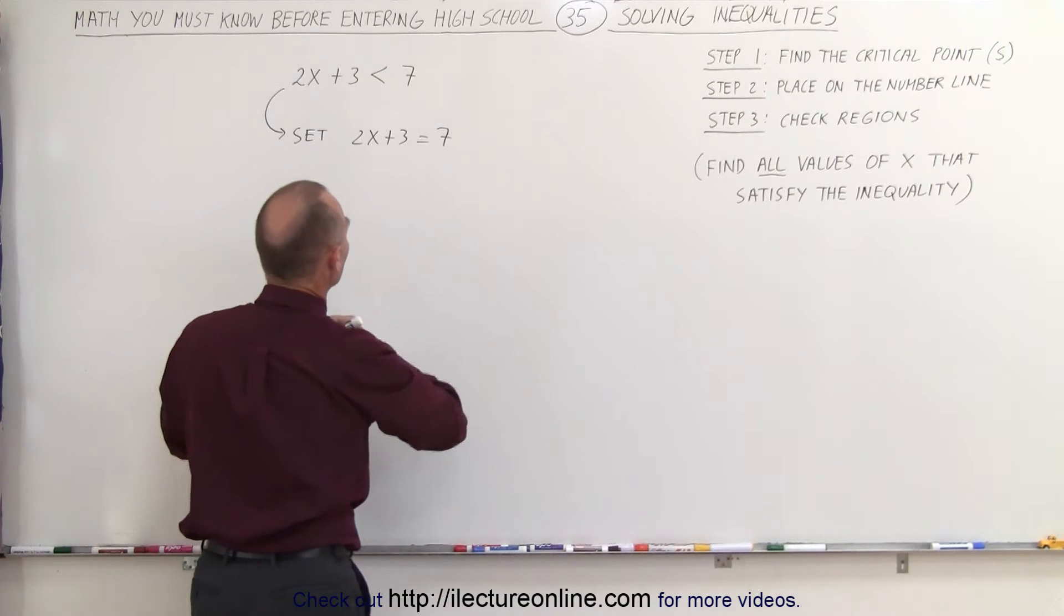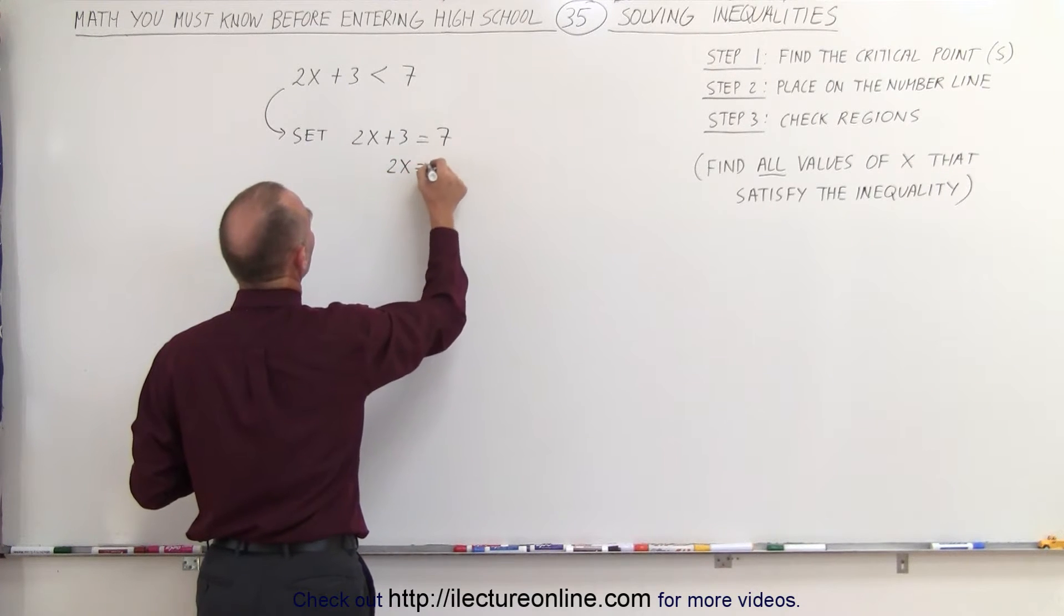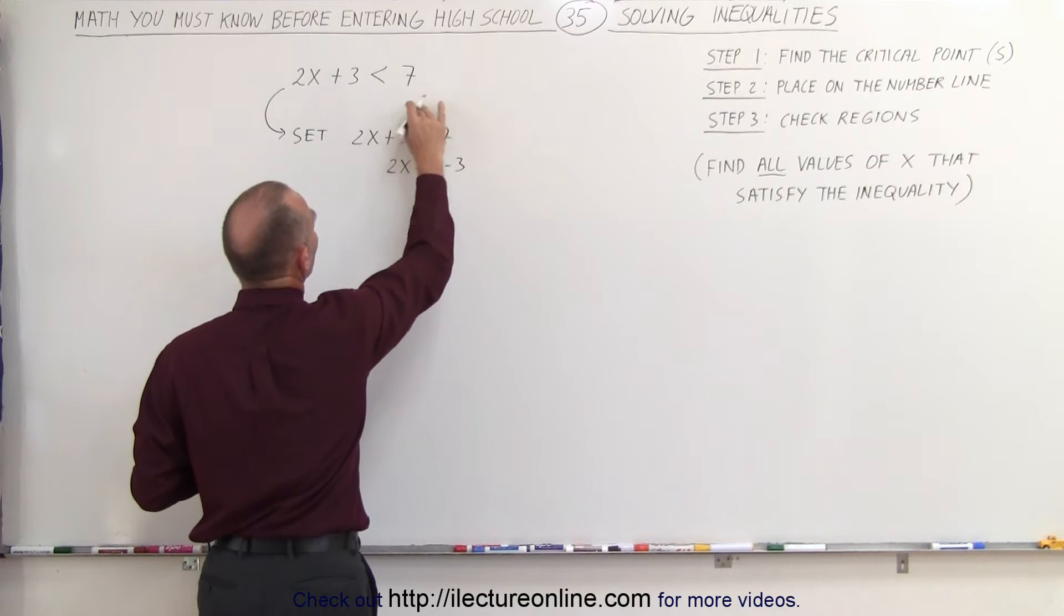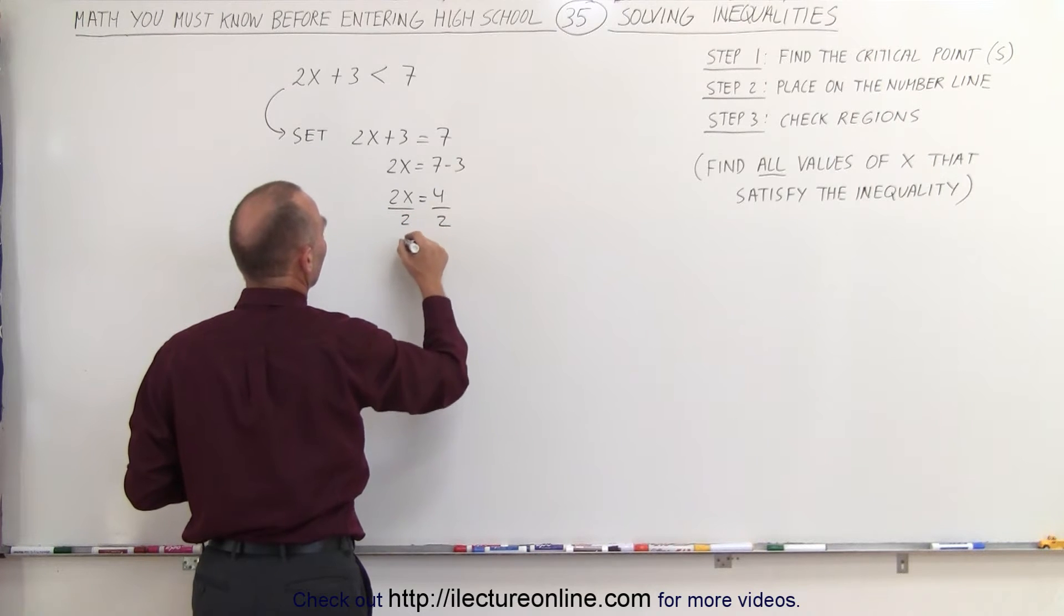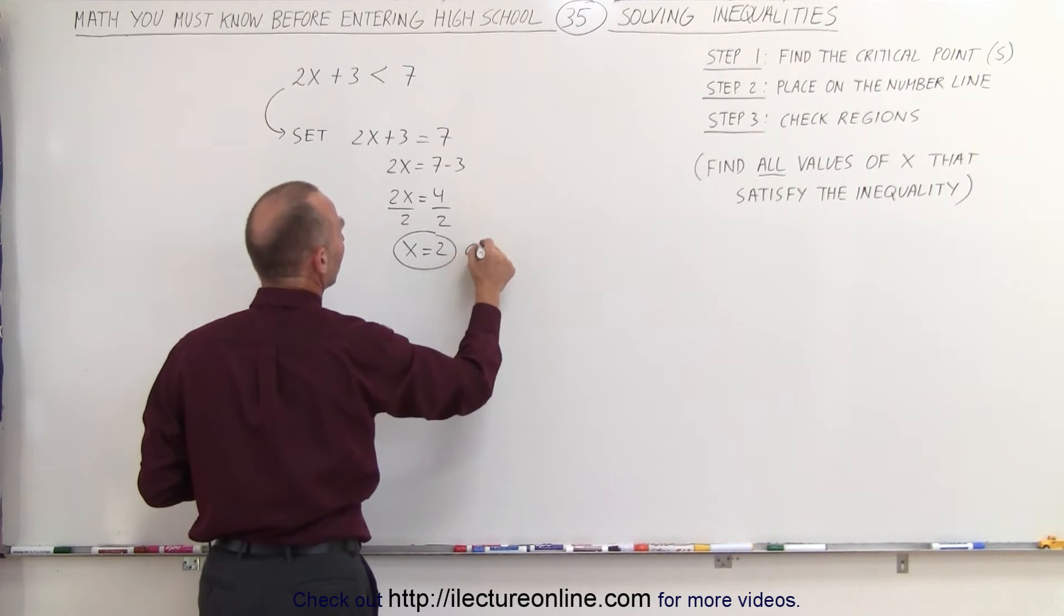So here we solve this equation. So we end up with 2x is equal to 7 minus 3 by moving the 3 to the other side. 2x equals 4. Divide both sides by the coefficient and we get x is equal to 2. This is called the critical point.